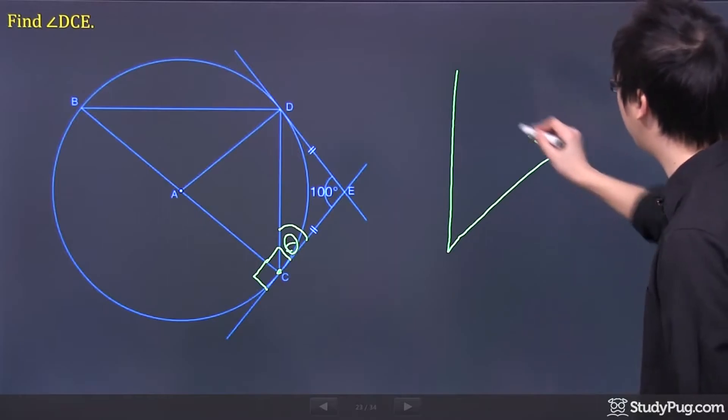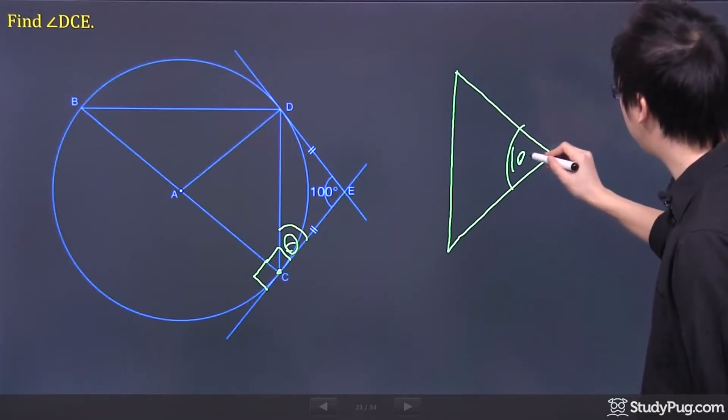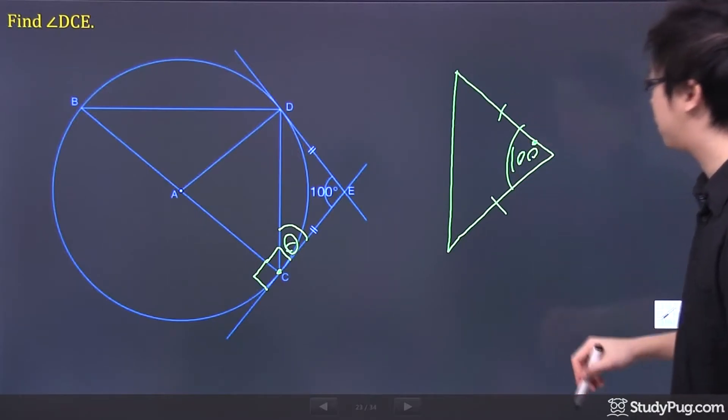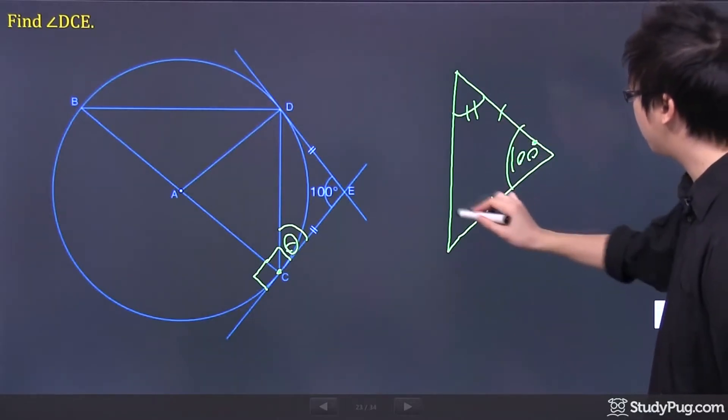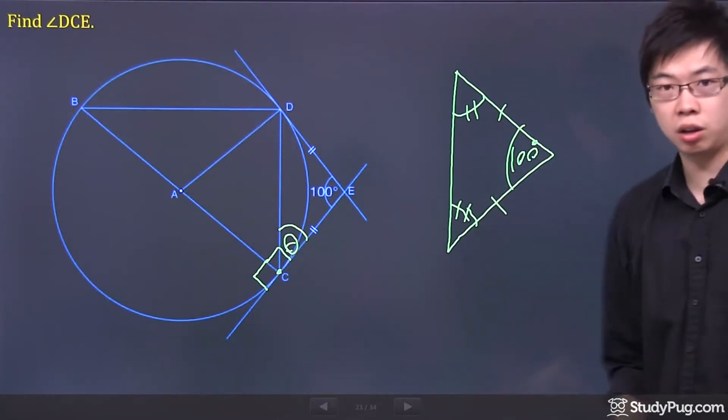So if I just kind of bring that triangle out here, it means that this is 100 degrees, and this side and this side is the same. That means these two angles here will be identical.